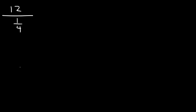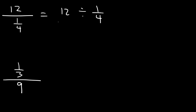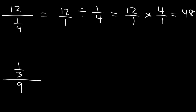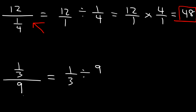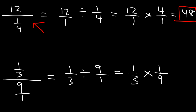Try these two problems: divide 12 by 1 fourth, and divide 1 third by 9. For the first one, rewrite as 12 divided by 1 fourth, write 12 as 12 over 1, use keep-change-flip, and multiply: 12 times 4 is 48. For the second, rewrite as 1 third divided by 9, or 9 over 1. Keep the first fraction the same, change division to multiplication, flip the second fraction: 1 times 1 is 1, and 3 times 9 is 27. The answer is 1 over 27.